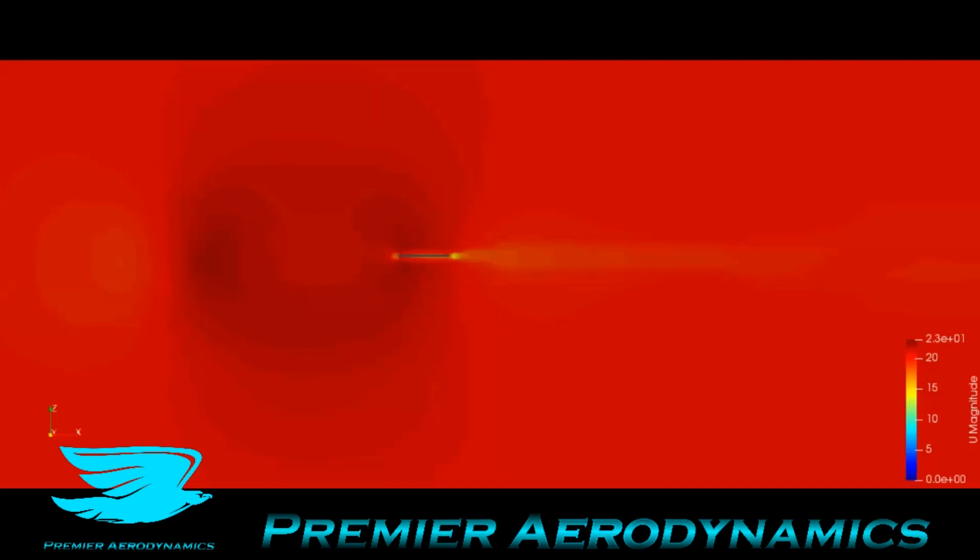This is the Y plane, so it's going through the blimp and the flow is going from left to right. And it's the U-magnitude. And as you go over the blimp, as you'd expect, the flow does accelerate over the nose and then at the back there's a little bit of acceleration before it decelerates. And then the wake you have starting.